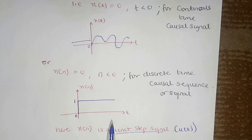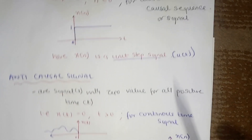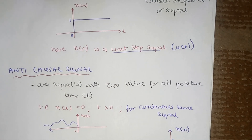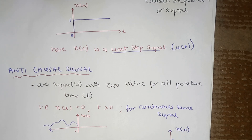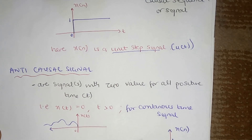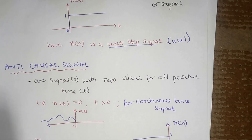Let's look at another type of signal: anti-causal. Anti-causal signals are signals with zero value for all positive time. Be very careful here — non-causal is not the one with zero value for all positive time. If causal is a signal with zero value for all negative time, you might think non-causal is the opposite, but no. Anti-causal signals are the signals with zero value for all positive time — they don't have value in the positive region. Anti-causal is the opposite of causal.